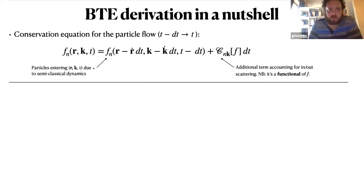Now the Boltzmann equation is essentially a conservation equation for the particle flow because if you focus on the evolution from t minus dt (dt is an infinitesimal interval) and we go to time t, what we can say is that the number of particles that we find in this region of the phase space must be equal to the number of particles that are driven by the semi-classical dynamics. Here we have the value indeed at t minus dt plus an additional term that takes into account all the particles that are entering or leaving this state due to the microscopic scattering events.